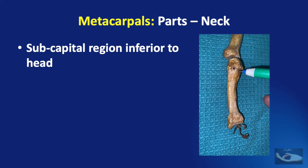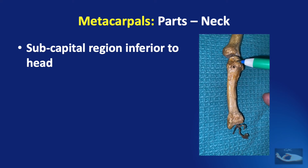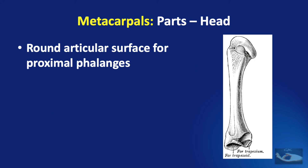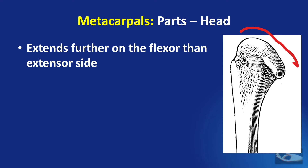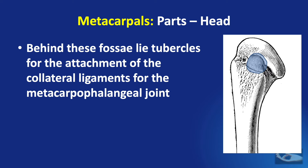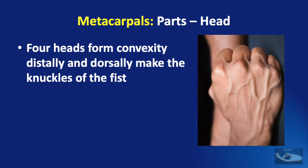The neck of the metacarpal is the subcapital region between the shaft and the head, where the nutrient foramina are often located. The head is very characteristic — it has a rounded articular surface to articulate with the proximal phalanx, extending further on the flexor side, so it is oriented more to the volar side. Adjacent surfaces of the heads have deep smooth fossae for passage of interosseous tendons, and behind these fossae lie tubercles for attachment of the collateral ligaments. The heads of the four finger metacarpals form the knuckles of the fist.